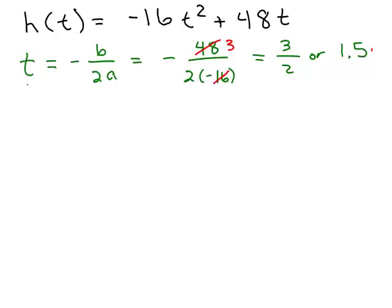It doesn't matter which way you do it. So, that's going to be the first part of the vertex point. I'll just put 1.5. So, we know at 1.5 seconds that's when it's going to start coming down again. That's basically what it's telling us about that ball.